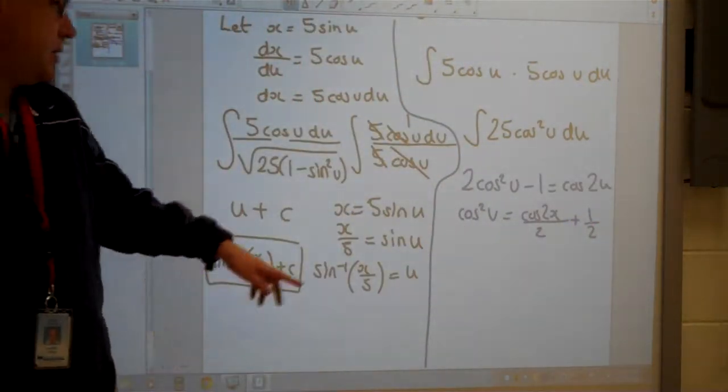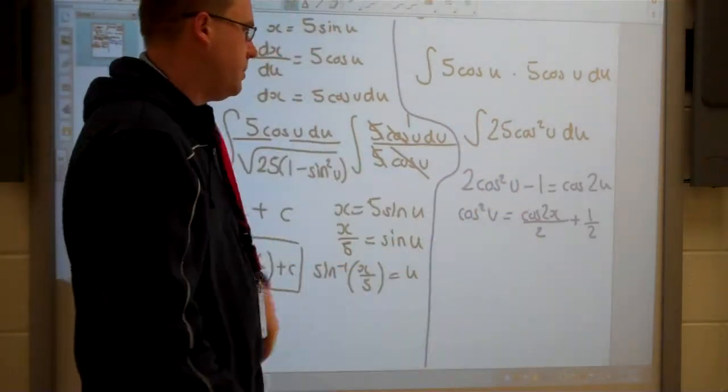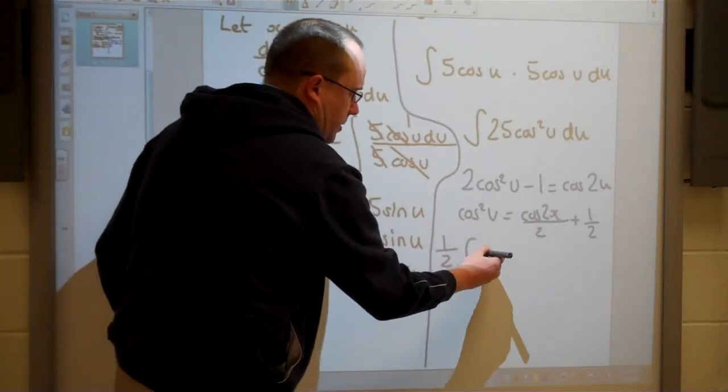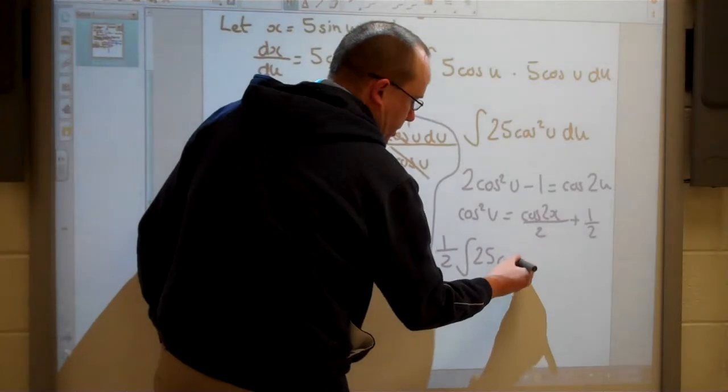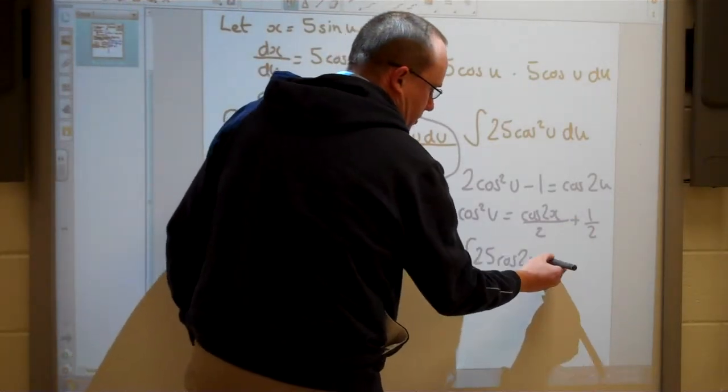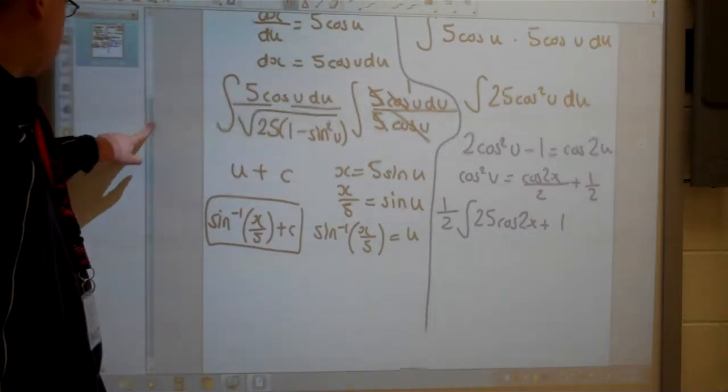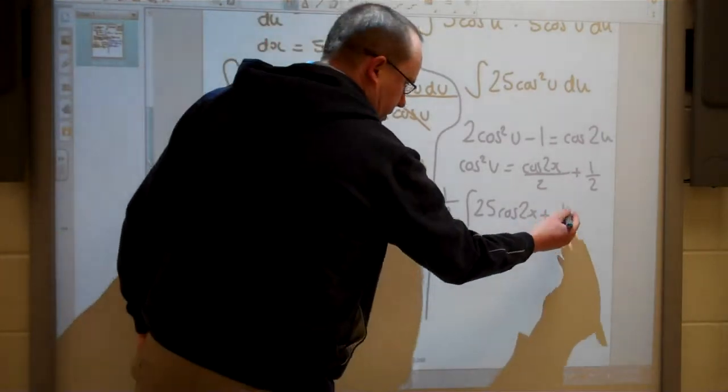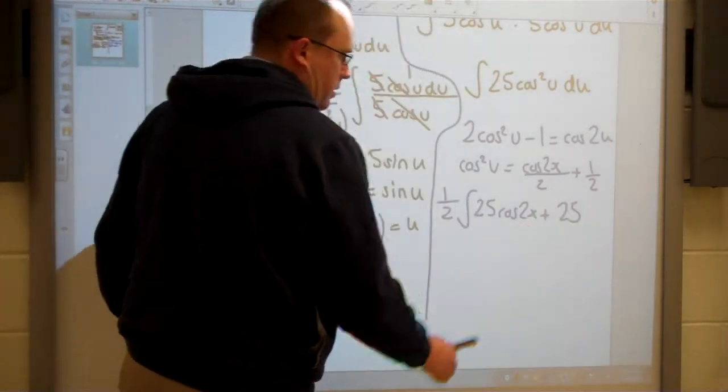Then I can now make a substitution in for cosine squared. So I've also got to divide by 2 here as well. I'm going to take the half out to the front here. So I'm going to do a half times the integral of 25 times cosine 2x plus 1. So I've done my substitution. Now I just need to worry about my integral. And actually 1 times 25, times 25 should also be 25.